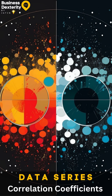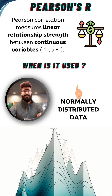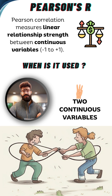Welcome to Business Dexterity. In today's video, let's talk about correlation coefficients. The Pearson's correlation measures the linear relationship between two continuous variables. It quantifies the strength and direction of the linear association between the variables, ranging from minus 1 to plus 1. It assumes that there is a linear relationship between the data and that it is between two continuous variables